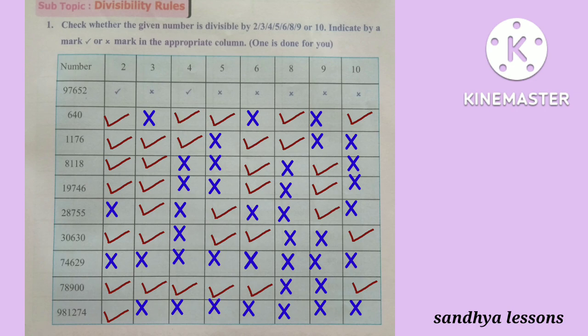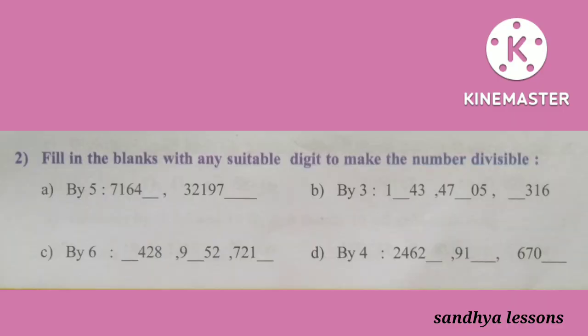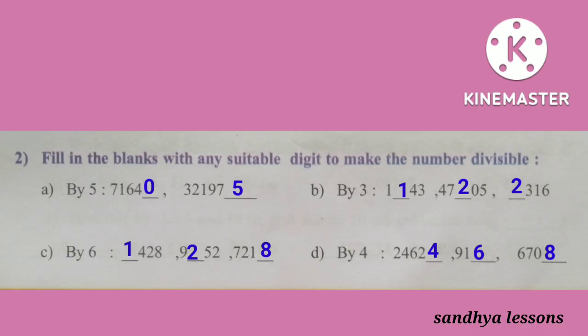9,81,274 is divisible by 2. Second Roman: Fill in the blanks with any suitable digit to make the number divisible. 71,640 and 3,21,975 are divisible by 5. 1,143; 47,205; and 2,316 are divisible by 3. 1,428; 9,252; and 7,218 are divisible by 6. 24,624; 916; and 6,708 are divisible by 4.